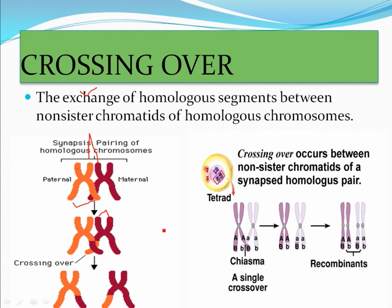Before crossing over, many processes occur in prophase. Crossing over occurs between non-sister chromatids of homologous chromosomes. Synapsis means some type of pairing occurs before crossing over. In one chromosome there are two sister chromatids — that is called a dyad. So in two homologous chromosomes, two chromatids plus two chromatids gives four chromatids total, and this is called a tetrad. Crossing over occurs at the tetrad stage.